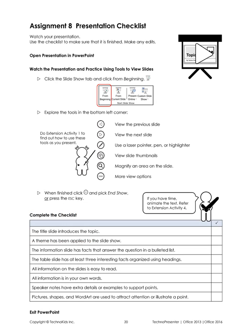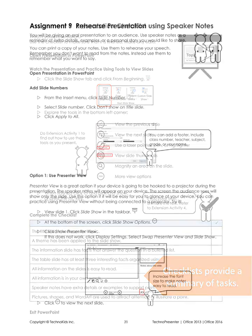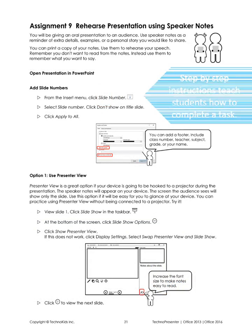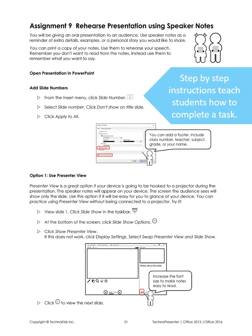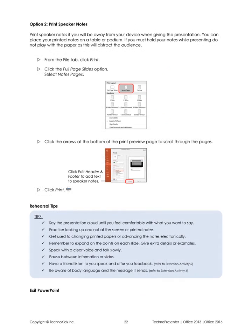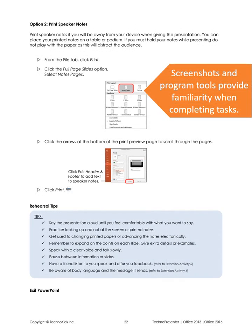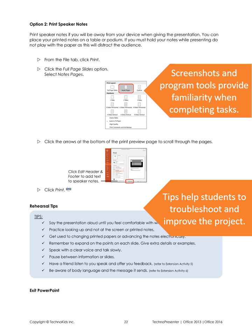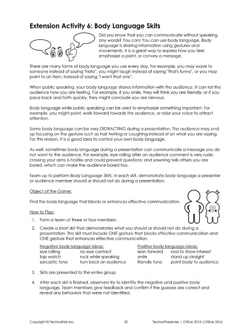Checklists ensure students stay up to date by completing a summary of tasks before they begin the next step. Step-by-step instructions complete with pictures and tips direct students as they build and complete their task using the software chosen for the project. Screenshots and program tools provide familiarity when completing tasks, and tips placed throughout assignments help students troubleshoot and improve the project. Extension activities are optional and designed to enhance or extend particular skill sets beneficial to the outcome of the project.